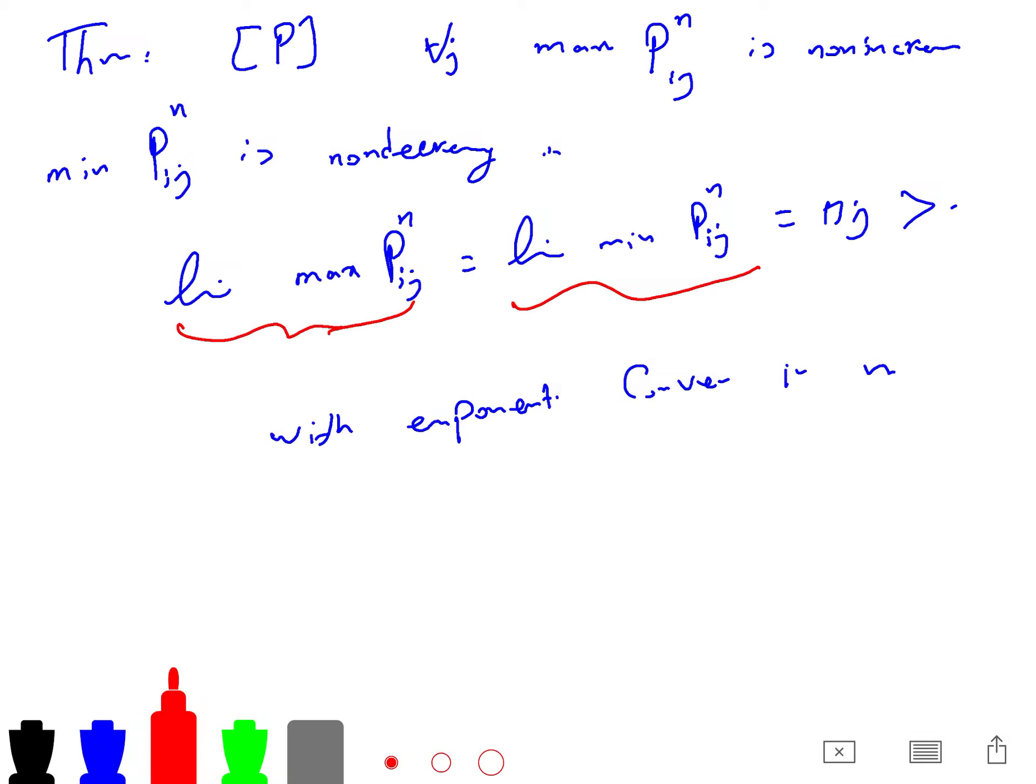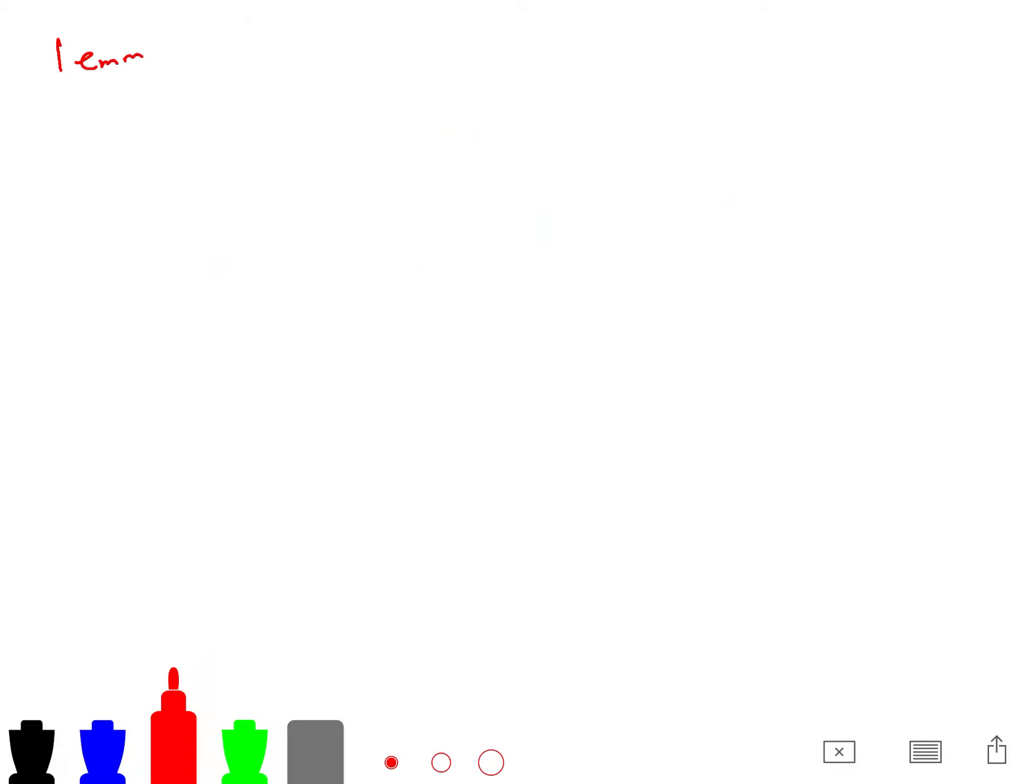So to prove this theorem, we need a couple of lemmas. But really, the main important lemma that you need to prove this theorem is just this lemma. That says if p is a transition matrix of an arbitrary finite state Markov chain, then for each j, the maximum pij is non-decreasing. And you can prove for min, so this is non-increasing. And you can prove the same thing for minimum, minimum of pij to the n, which is non-decreasing.